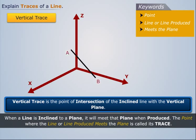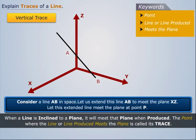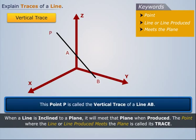For example, consider the vertical trace of a line AB. Let us extend this line AB to meet the plane XZ. Let this extended line meet the plane at point P. This point P is called the vertical trace of a line AB.